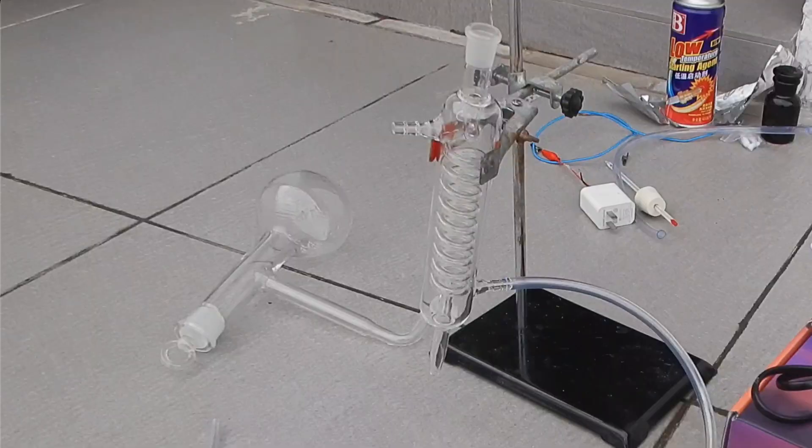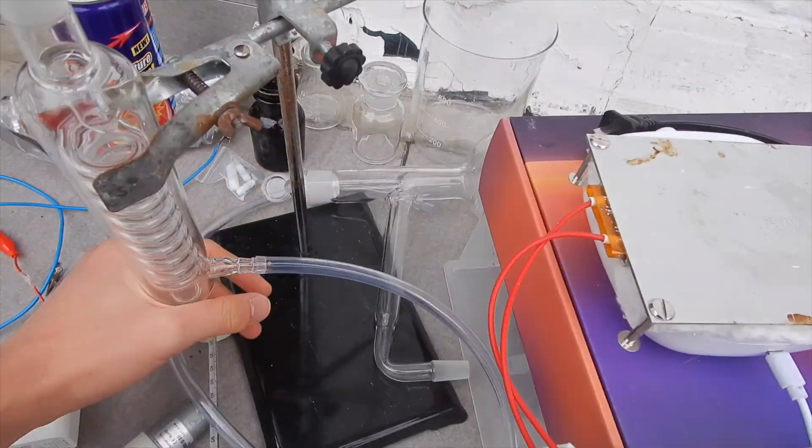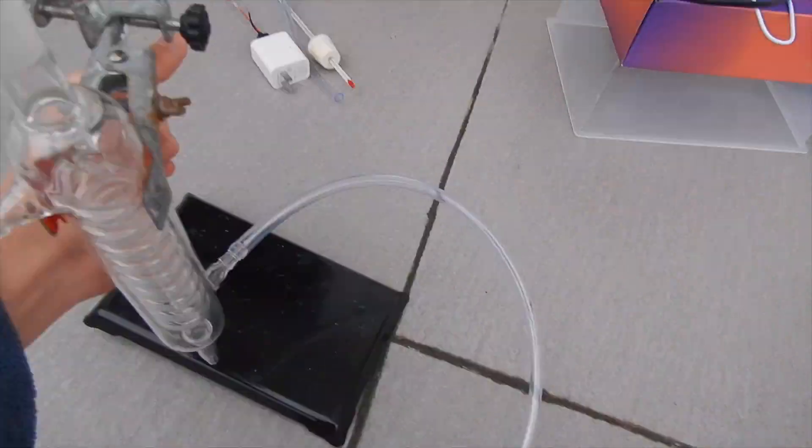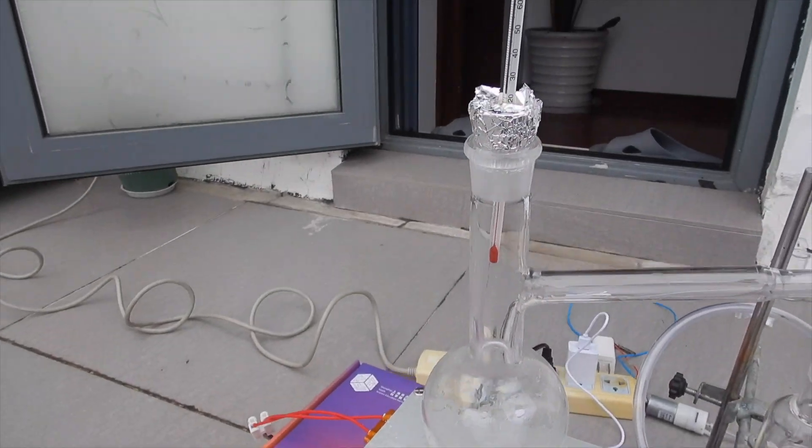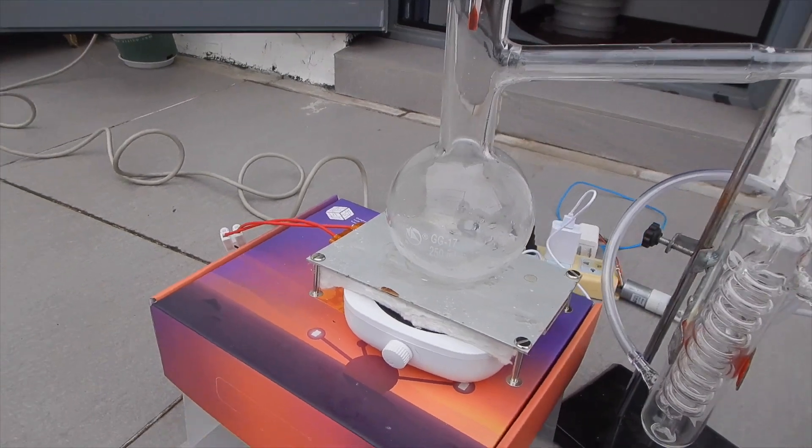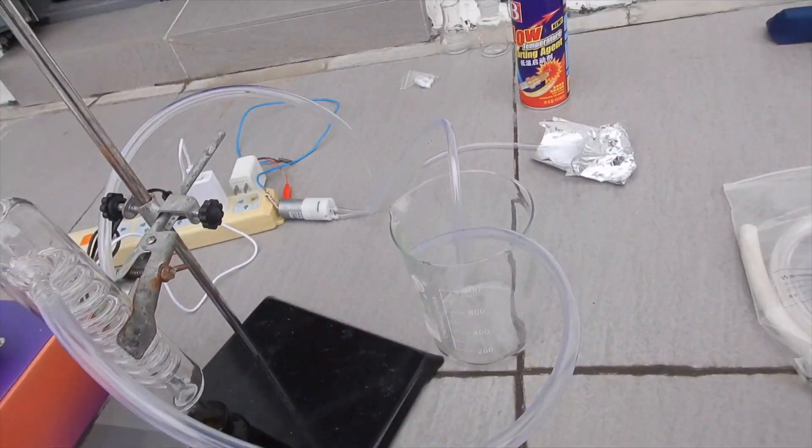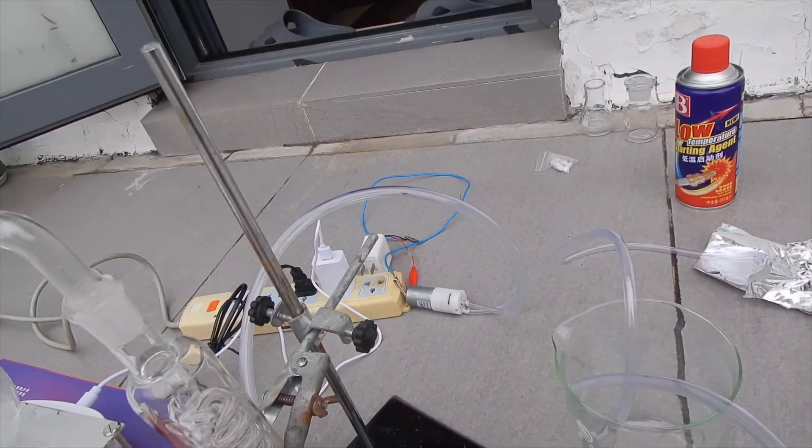We also need a distillation apparatus, and I used the all glass setup I just bought recently. I moved outside and constructed my apparatus piece by piece. Here is a shot of everything we will need. I first put the hotplate on a few stacked boxes, and put the magnetic stirrer under it. Then, the distillation apparatus is installed above the hotplate.